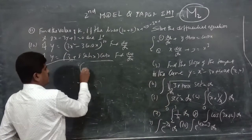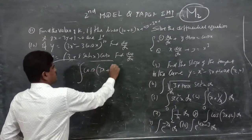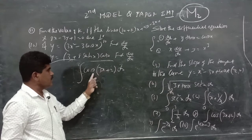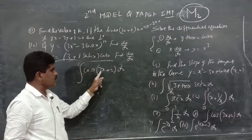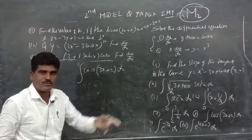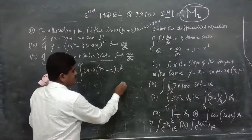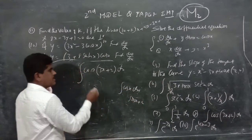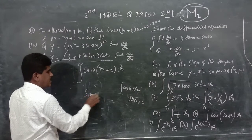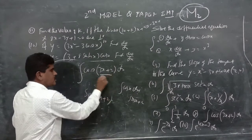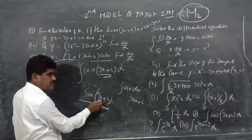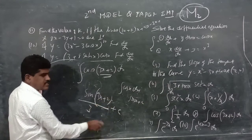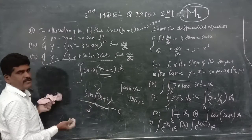Eighth problem: evaluate the integral of cos(3x plus 2) dx. Since the integration of cos x is sin x, for cos(3x plus 2) we write sin(3x plus 2) and divide by the coefficient of x, which is 3. The answer is sin(3x plus 2)/3 plus C. The constant inside does not affect the denominator — only the coefficient of x goes to the denominator.